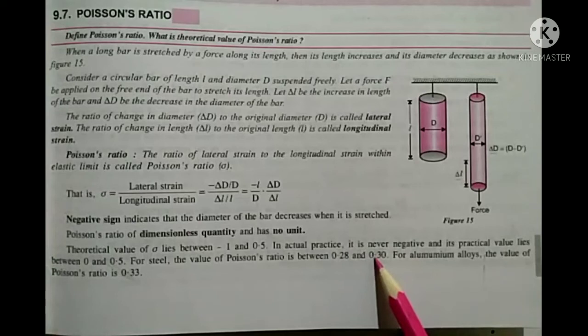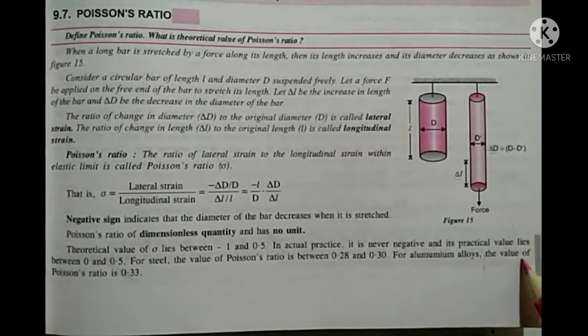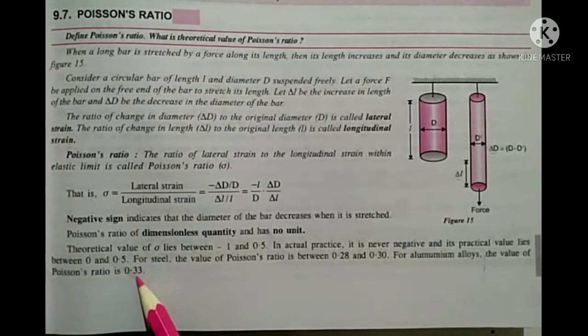For aluminum, the value of Poisson's ratio is 0.3.